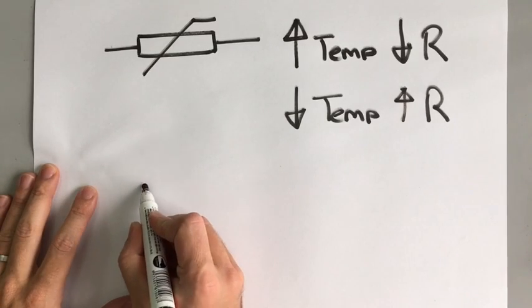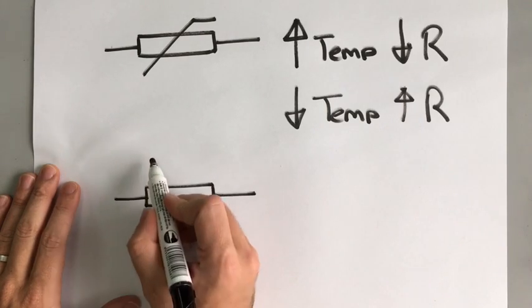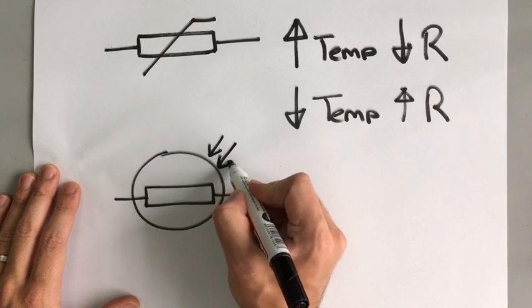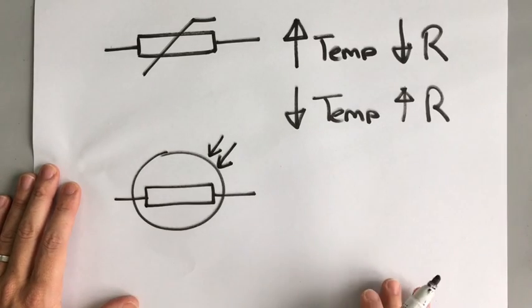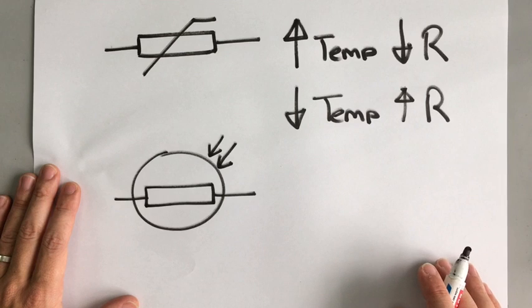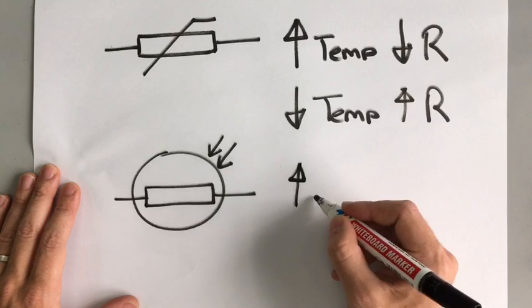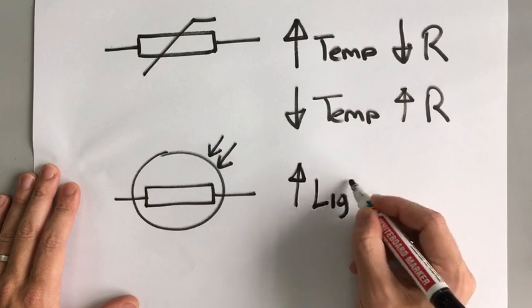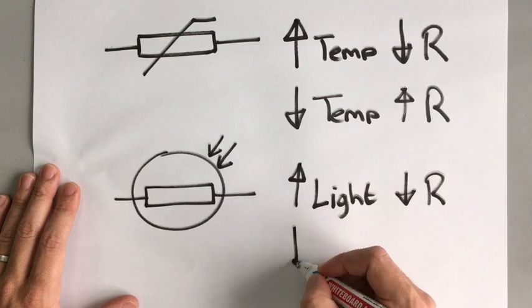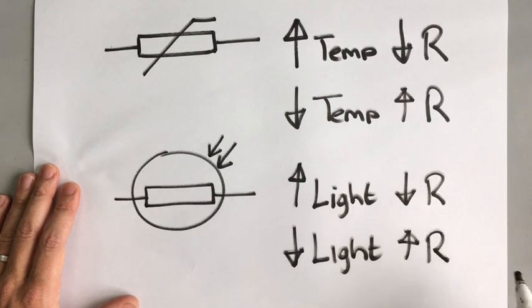The other component that I'll talk about now is the LDR. LDR stands for light-dependent resistor. And the way that we draw that is like this. Two arrows usually represents light. So in this case, light is coming in. And the LDR changes its resistance depending on how much light there is. So if the light intensity increases, then the resistance decreases. And if the light intensity decreases, then the resistance increases.